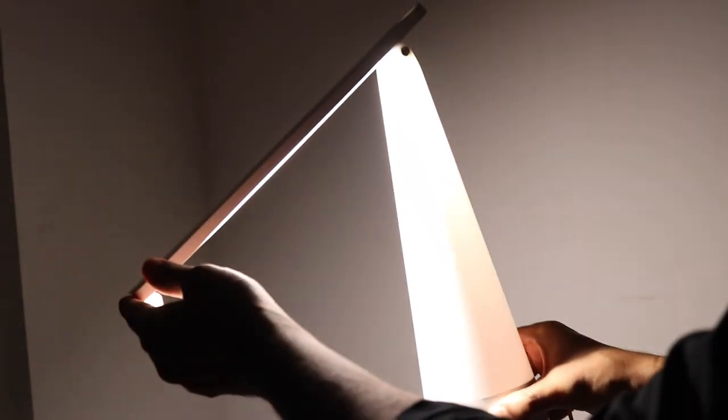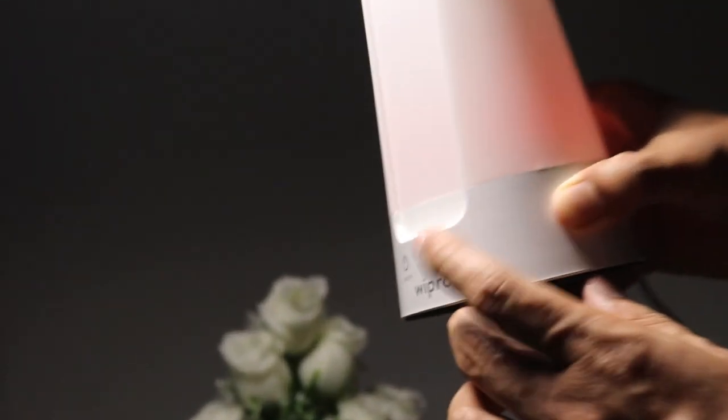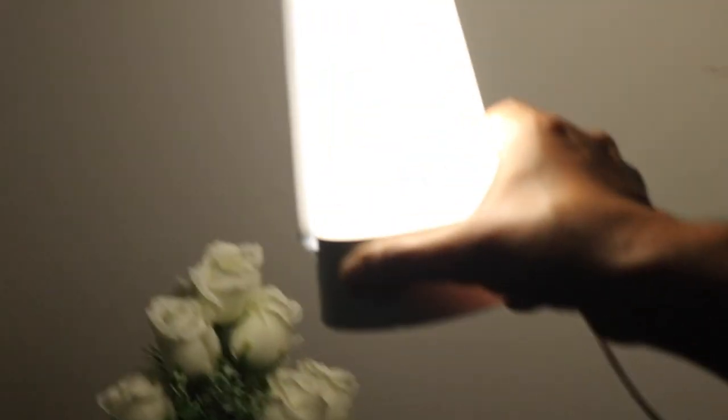You can also switch on the top lamp, which is with the other button. There you go, right? It's quite bright, isn't it? And then this continues to glow. If you want to switch this off, you can do that by pressing this button. Or if you want to keep both of them switched on, you can do that as well.